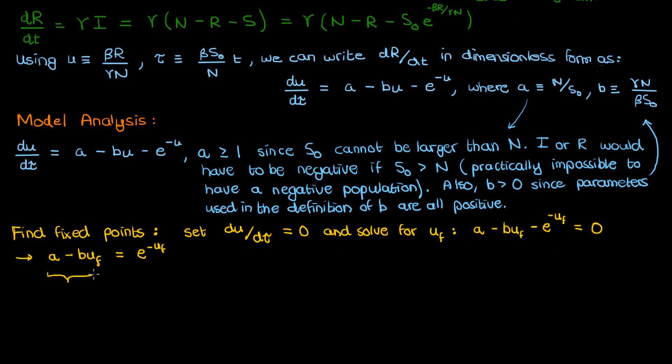Wherever these two functions intersect is where we would then have a fixed point because these functions would be equal at that point of intersection and therefore du by d tau will be 0.